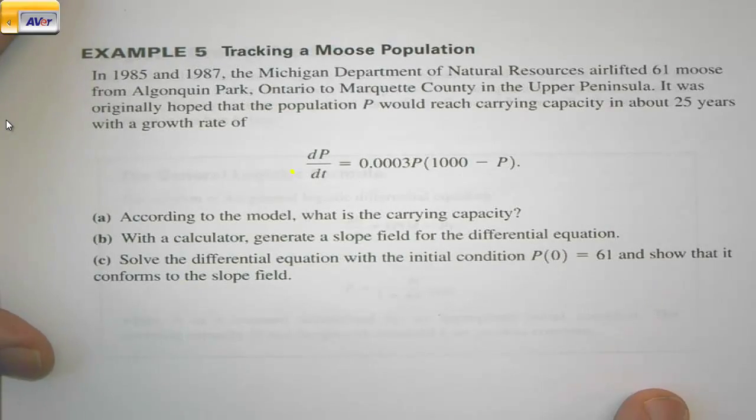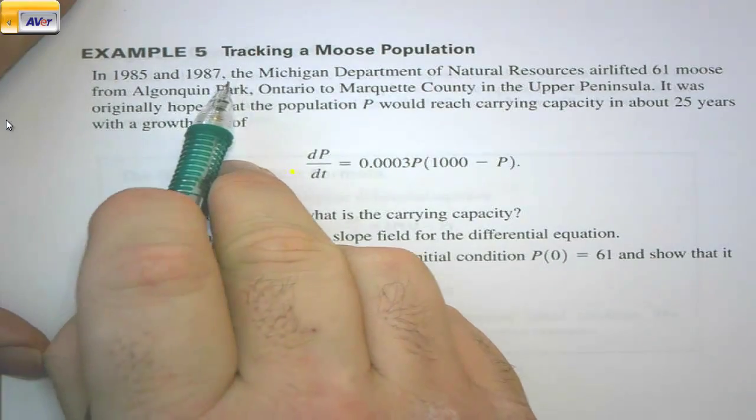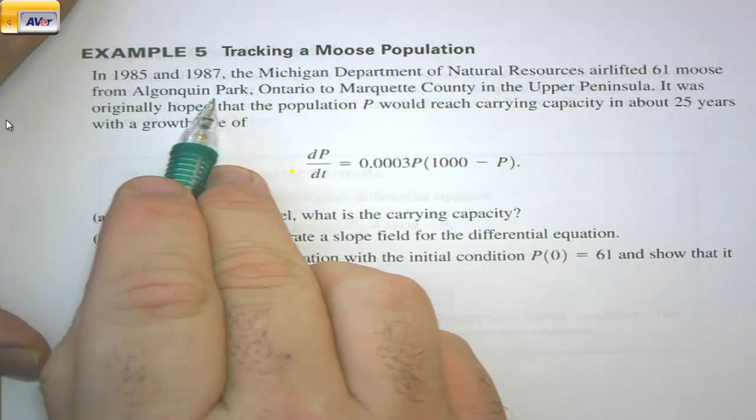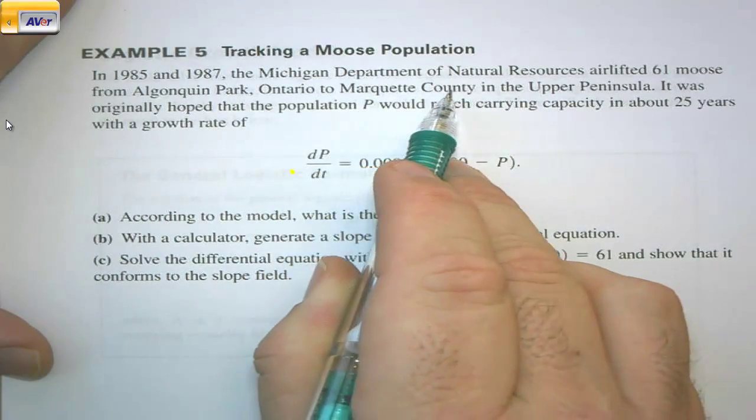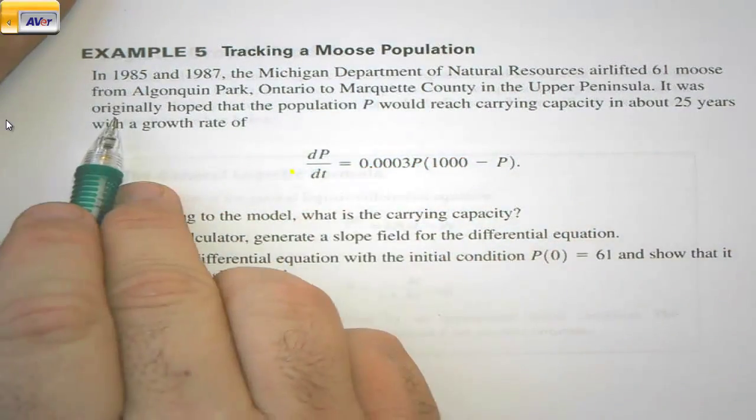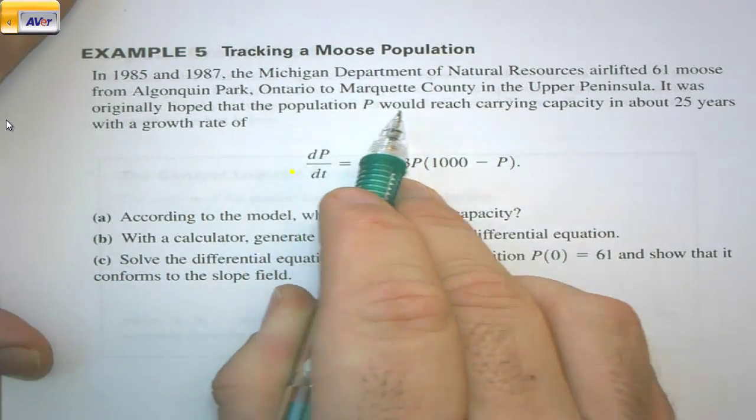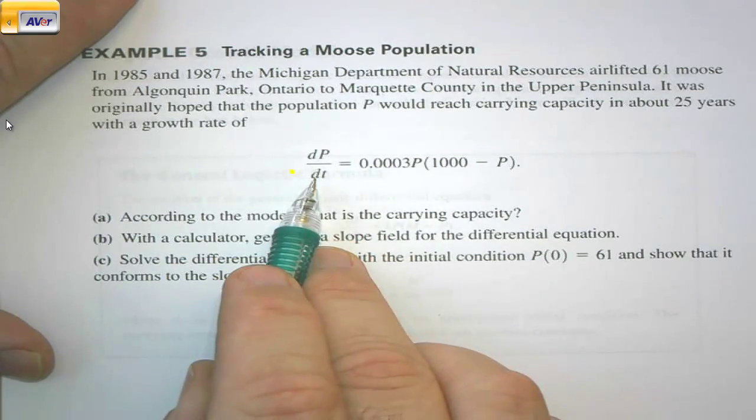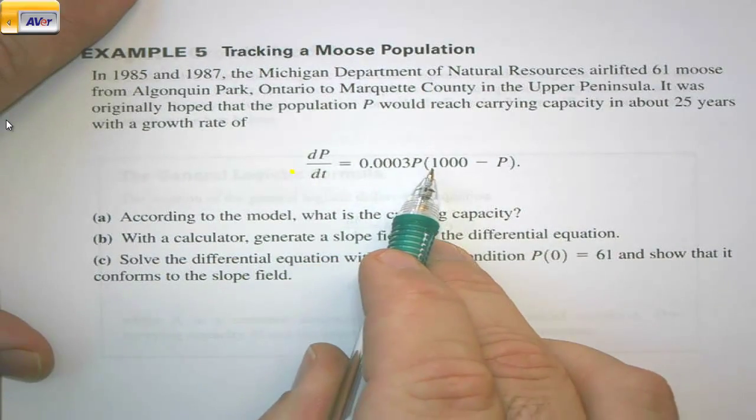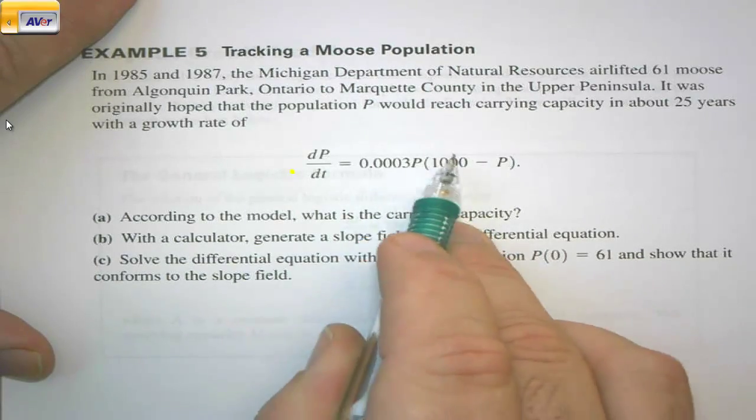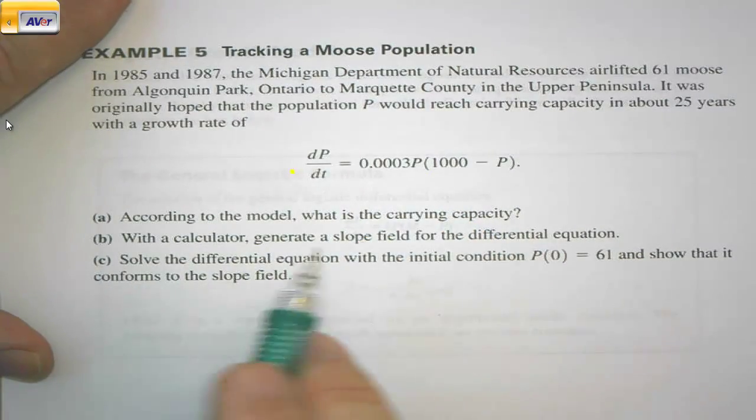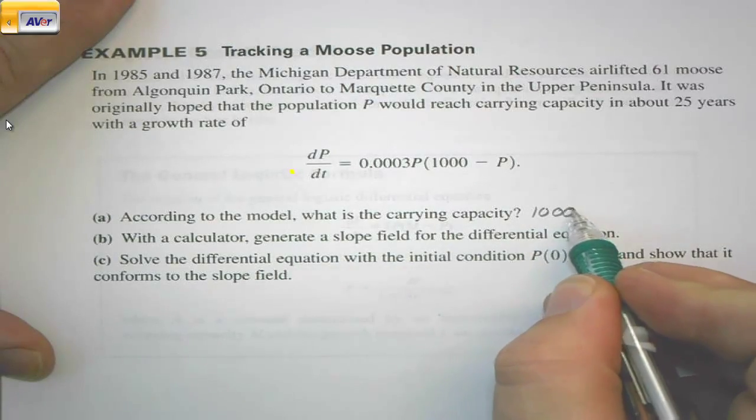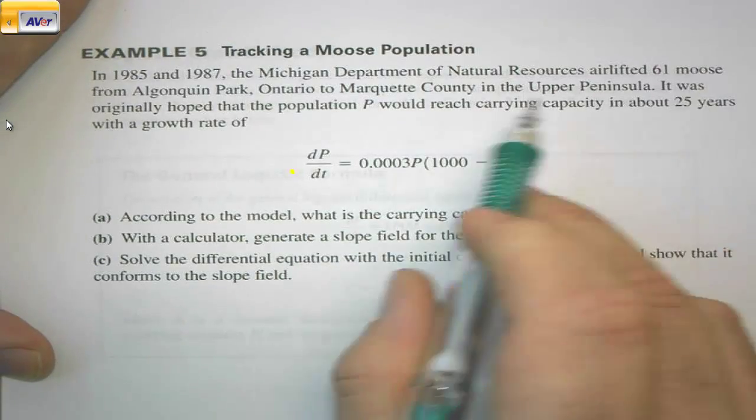Example 5: Tracking a Moose Population. In 1985 and 1987, the Michigan Department of Natural Resources airlifted 61 moose from Algonquin Park, Ontario, to Marquette County in the Upper Peninsula. It was originally hoped that the population P would reach carrying capacity in about 25 years, with a growth rate of dP/dt = 0.0003P(1000 - P). So the carrying capacity of the area is figured to be about 1000. According to the model, what is the carrying capacity? 1000 moose.